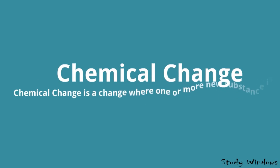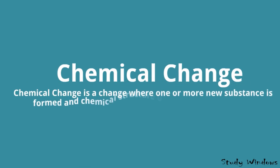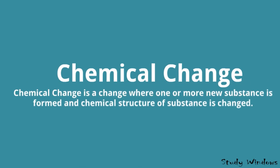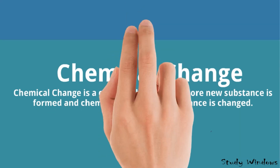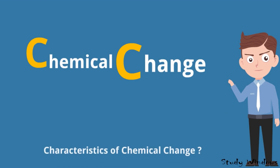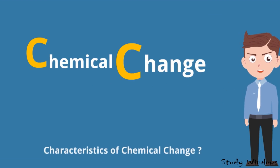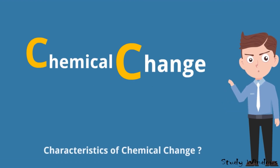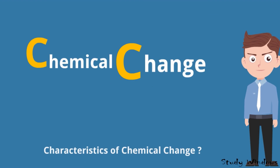Chemical change is a change where one or more new substances are formed and the chemical structure of a substance is changed. We'll discuss this in detail. So what are the characteristics of chemical change?